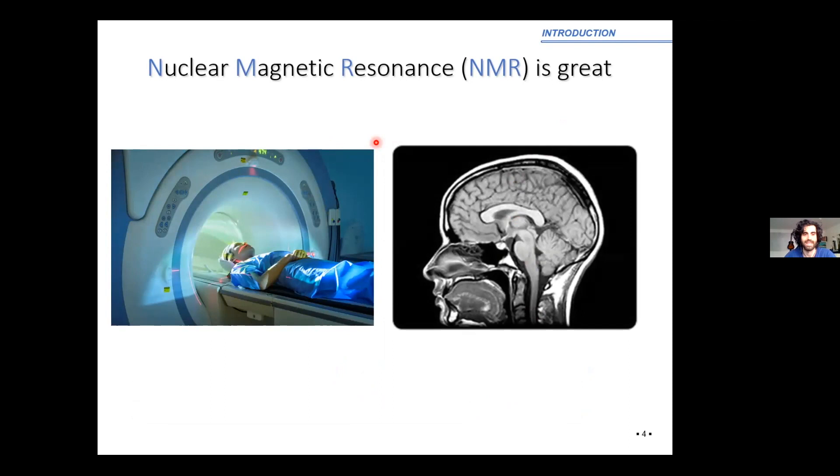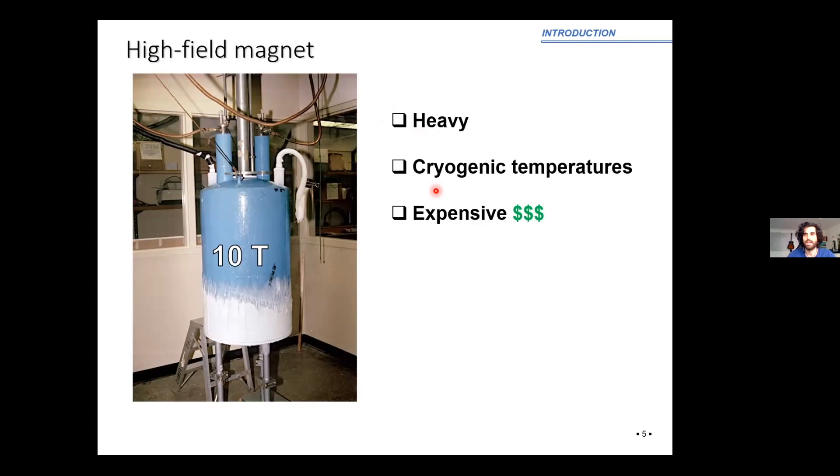So zero field NMR. Since this is an NMR audience, I don't need to convince anyone of how great NMR is in its applications in biology, medicine and chemistry. But we can consider the typical high field magnet apparatus and the fact that we need to work with superconducting magnets at values of 10 Tesla. This requires cryogenic temperatures, which can make the setup very heavy and costly. With the advent of benchtop spectrometers, this is starting to change. But in the following slides, I will mention some other advantages that persist by getting rid of the magnet altogether.